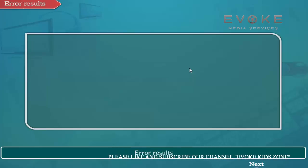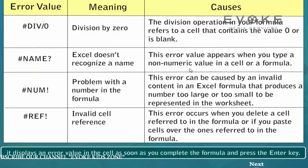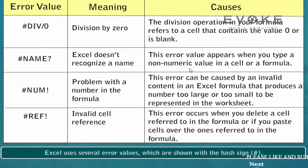Error results. If Excel cannot calculate a formula that you have entered in a cell, it displays an error value in the cell as soon as you complete the formula and press the Enter key. Excel uses several error values which are shown with the hash sign.